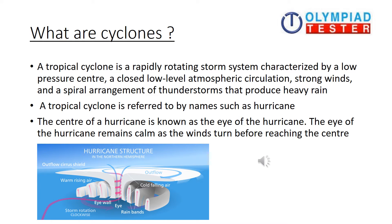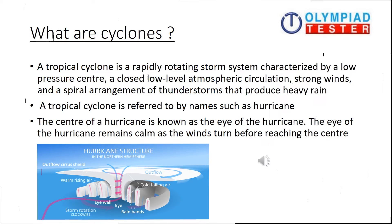The center of a hurricane is known as the eye of the hurricane. The eye of the hurricane remains calm as the winds turn before reaching the center.